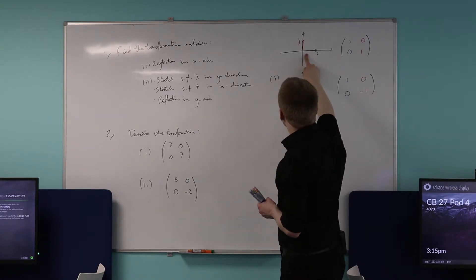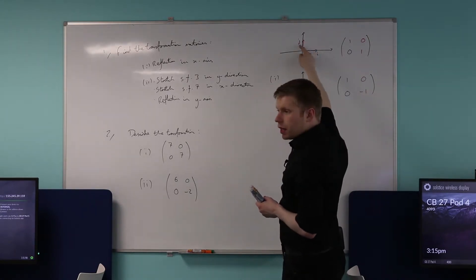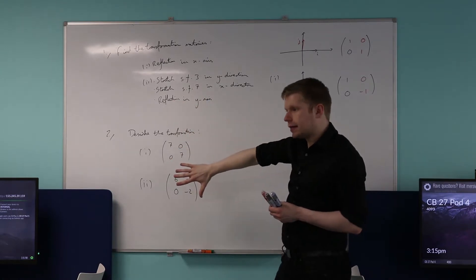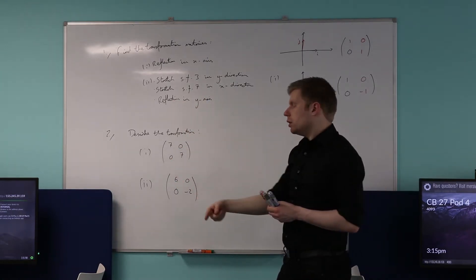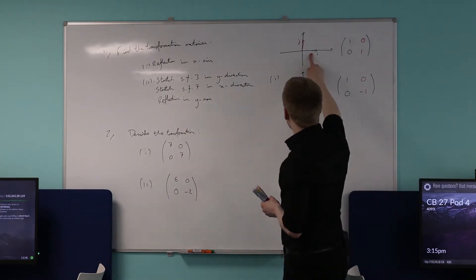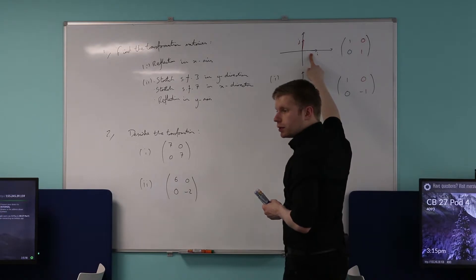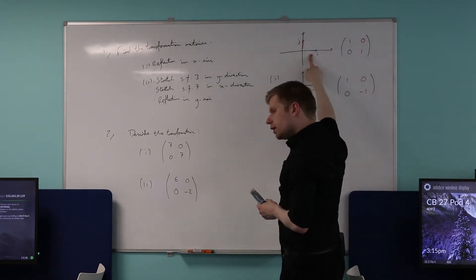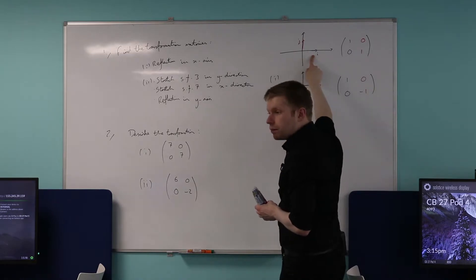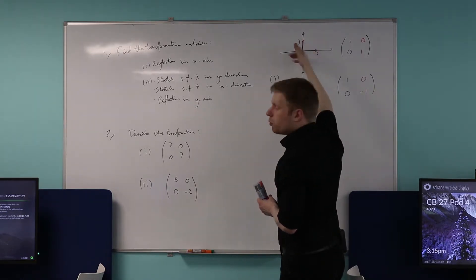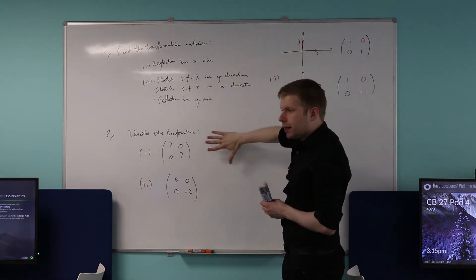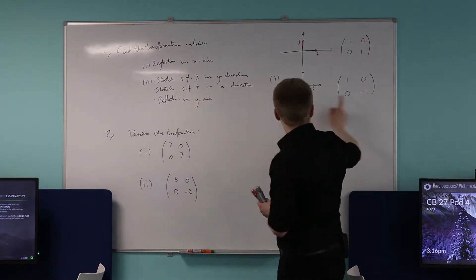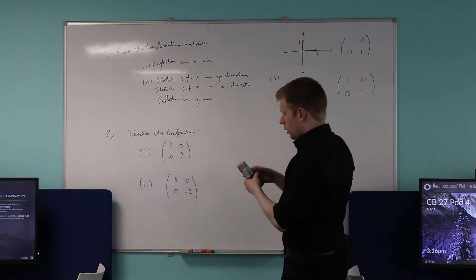So what I'm asking is: you see these two vectors — if you perform the transformation and reflect them in the x-axis, where do they end up? i doesn't move because it's a step in the x-direction. Whereas j will clearly end up inverted — it will be reflected down.